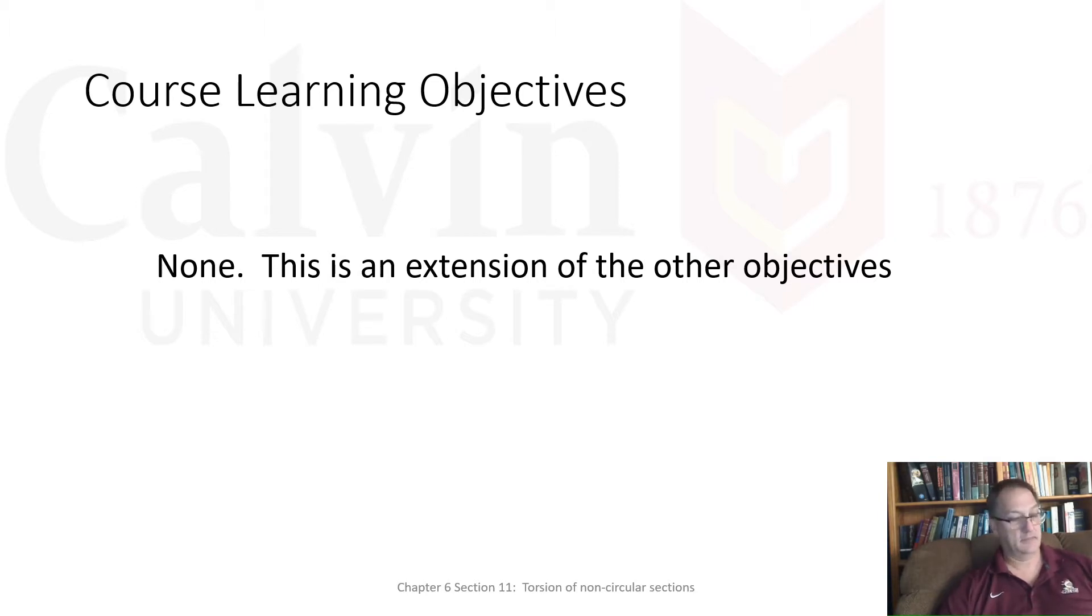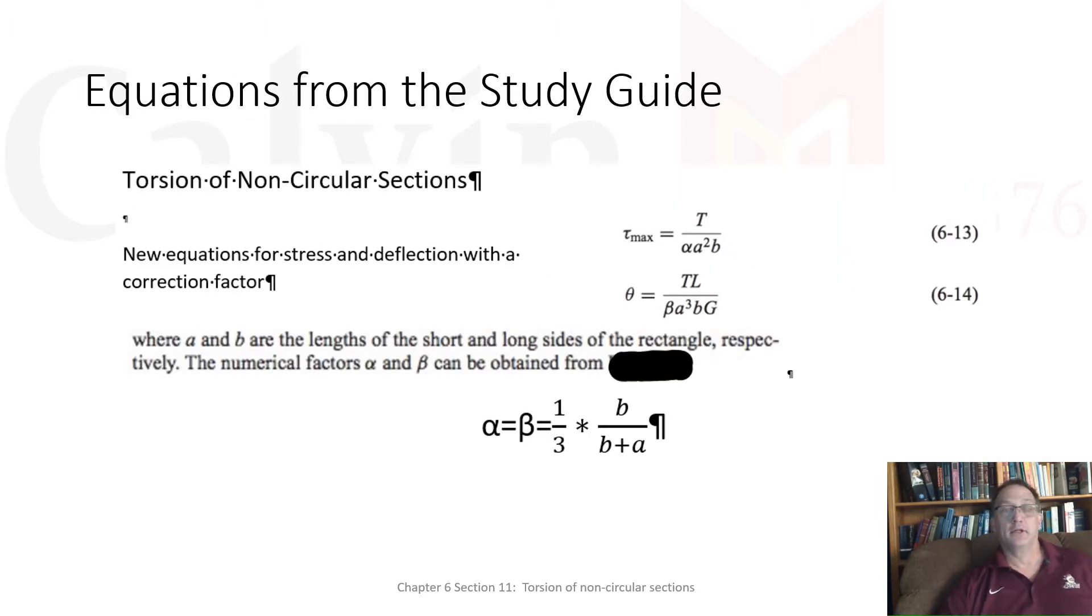This is now a change. The equations from the study guide—there's an entire section labeled the torsion of non-circular sections, and you're seeing new equations that are similar but not. We've got an equation for the shear stress, which is a function of the torque and the geometry. It was Tc over J—torque, distance to the extreme fiber, over that J, the polar moment of inertia. Now the geometry is represented by A squared B, so it's a little new. It's a little different, but it's the torque and the geometry. It's a force and an area. There are the parallels there.